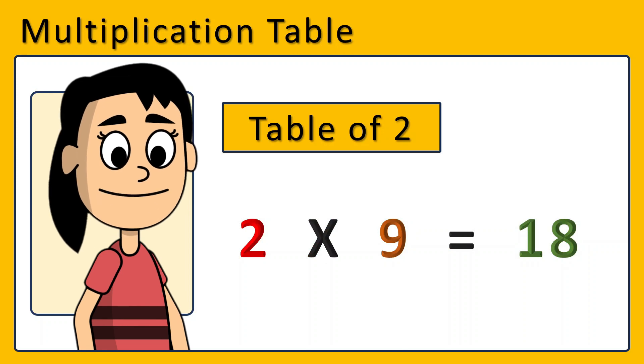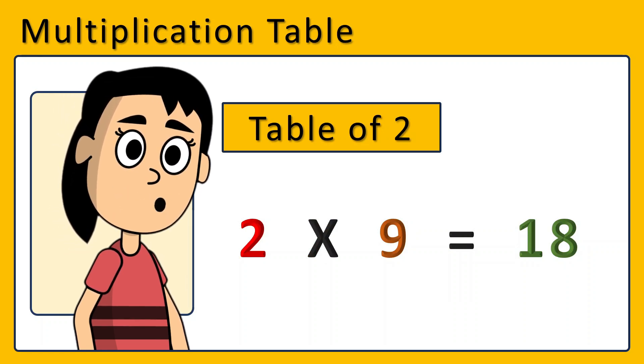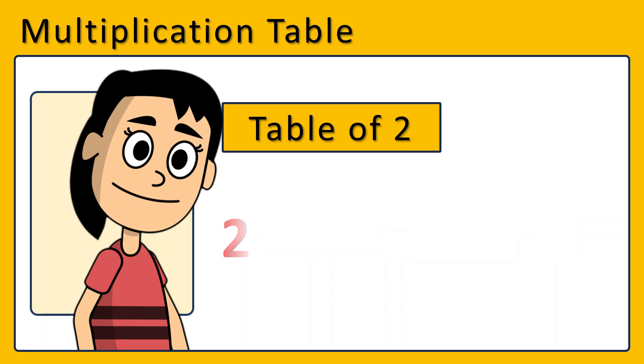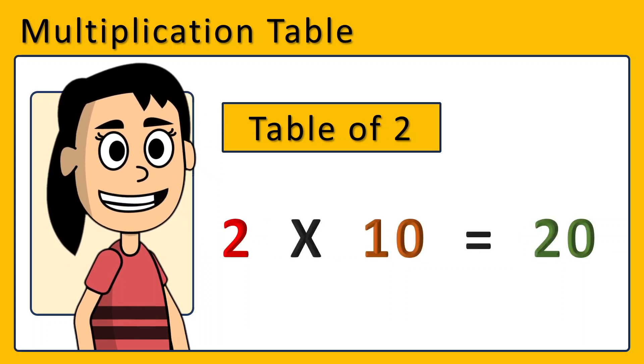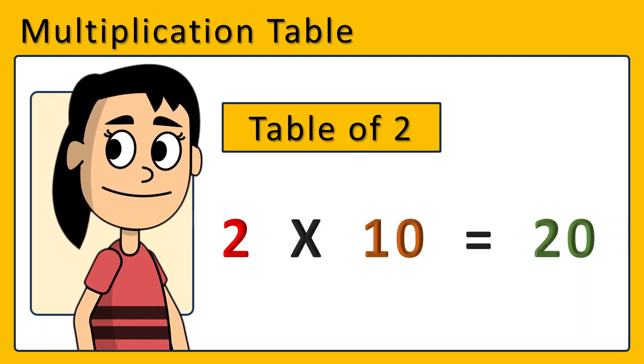2 times 9 are 18. 2 times 9 are 18. 2 times 10 are 20. 2 times 10 are 20.